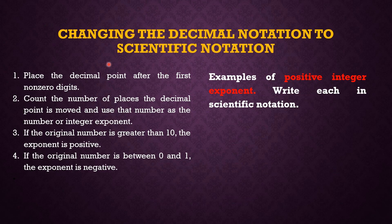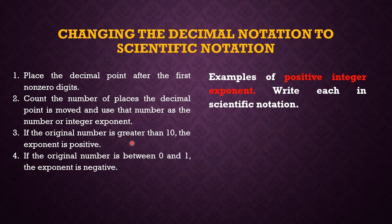Here are the steps on how to change a number from decimal notation to scientific notation. Step one: place the decimal point after the first non-zero digit. Count the number of places the decimal point is moved and use that as the integer exponent. If the original number is greater than 10, the exponent is positive. If the original number is between 0 and 1, the exponent is negative.